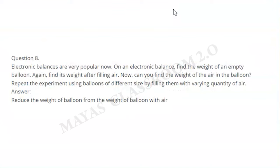Question eight: Electronic balances are very popular now. On an electronic balance, find the weight of an empty balloon. Again, find its weight after filling it with air. Can you find the weight of the air in the balloon? Repeat the experiment using balloons of different sizes by filling them with varying quantities of air. You can find the weight of air by reducing the weight of the empty balloon from the weight of the balloon with air.